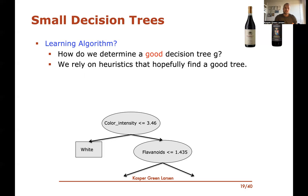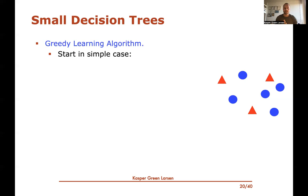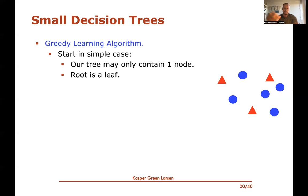In practice we use heuristics that hopefully find good decision trees. One of them is a greedy algorithm, which is the basic approach we'll see here. To motivate it, let's first look at the simplest case: what if the decision tree we need to build can only contain one node? Then the root must be a leaf — there's only one node, and it must immediately return a value.